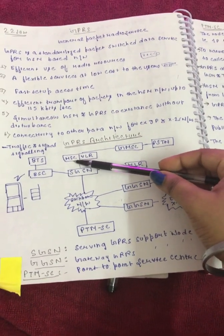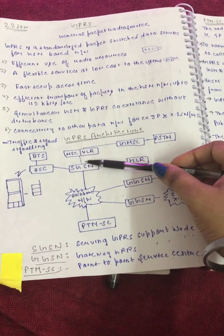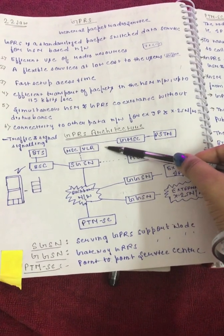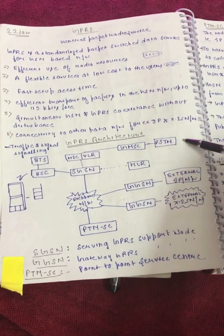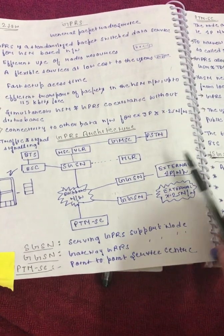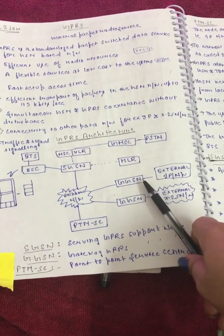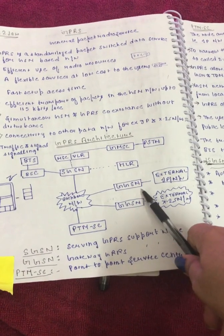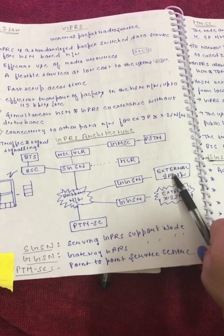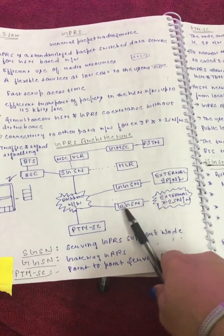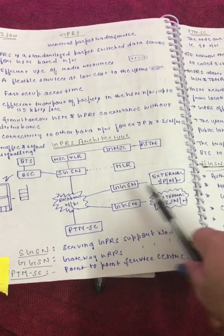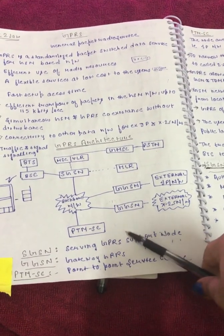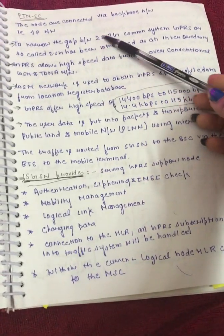MSC is Mobile Switching Center, VLR is Visitor Location Register, GMSC is Gateway Mobile Switching Center, PSTN is Public Switched Telephone Network. GGSN is Gateway GPRS Support Node, connected with the external IP network. X.25 network or PTM is Point-to-Multipoint Service Center.